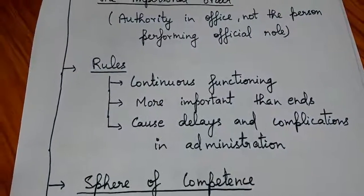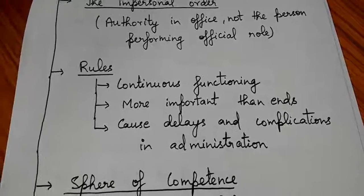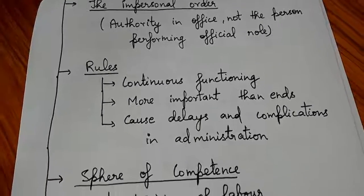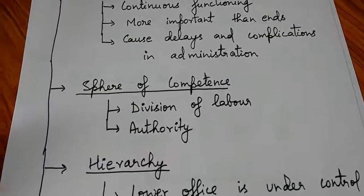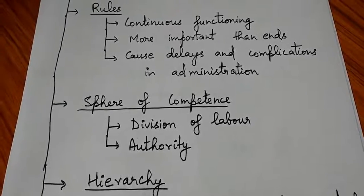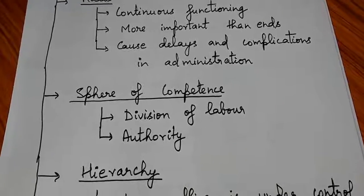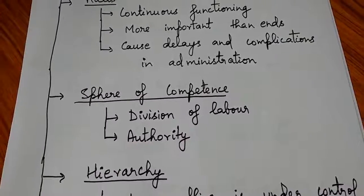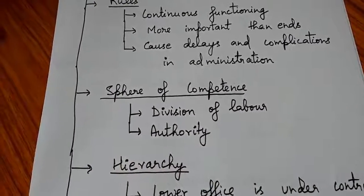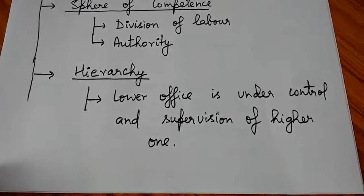The second characteristic is rules — bureaucracy is based on rules and regulations that ensure continuous functioning. However, sometimes rules become more important than ends, leading to delays and complications. The third characteristic is sphere of competence — division of labor, where each person's job, authority, and area of control are clearly defined.